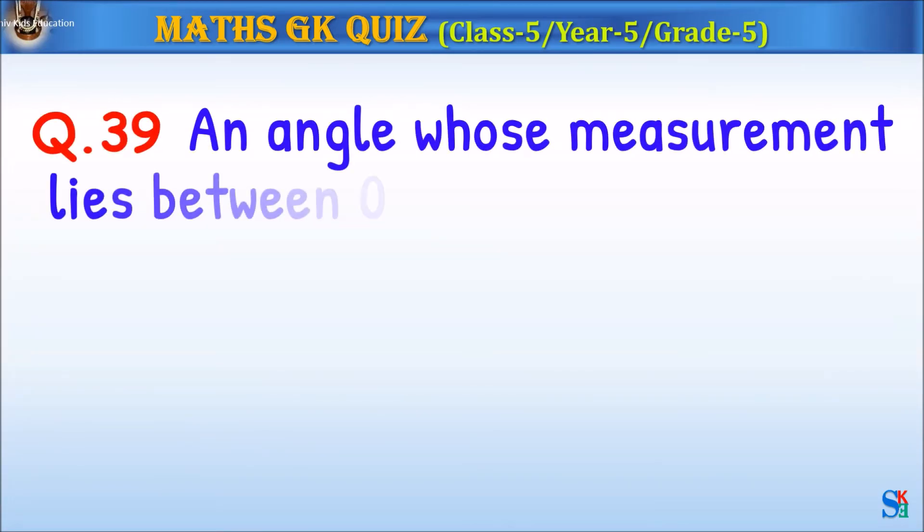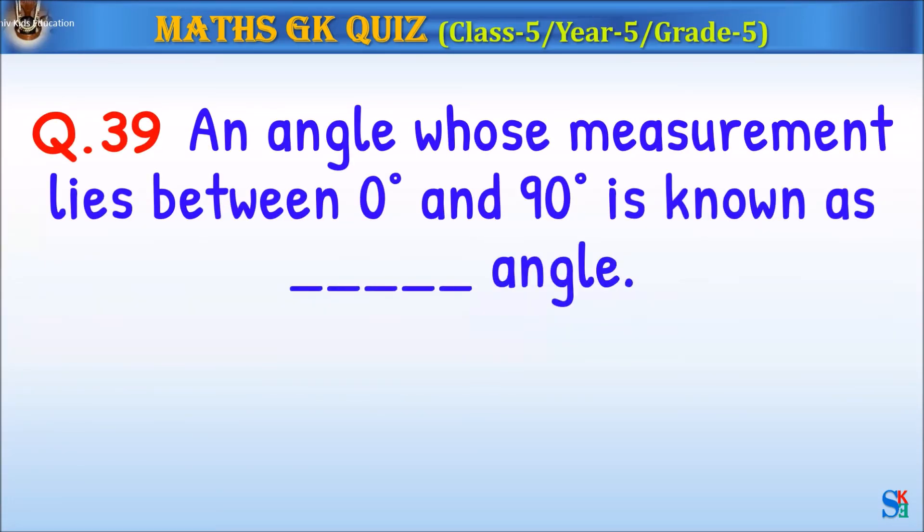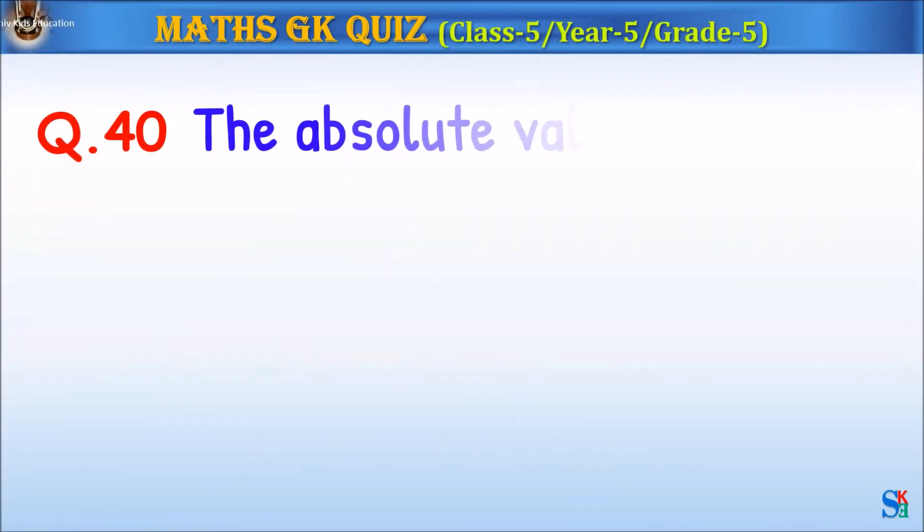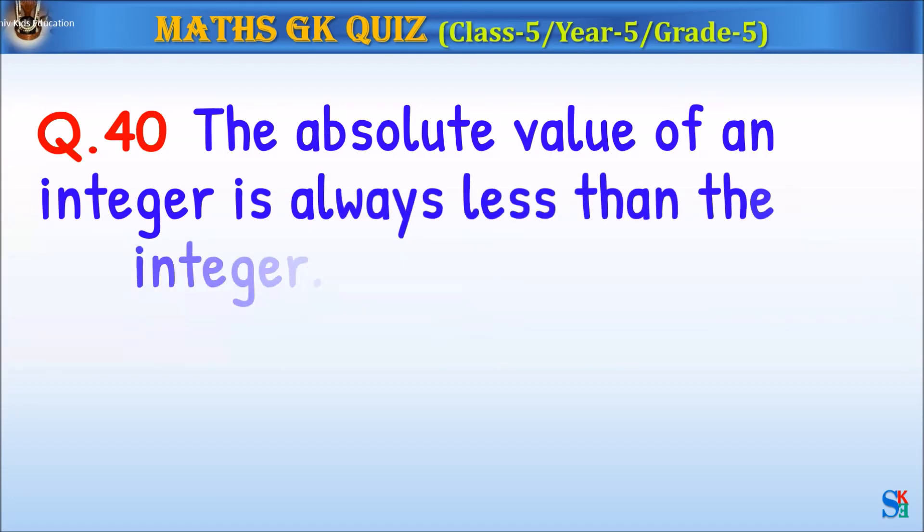Question 38: Which number is neither prime nor composite? The answer is 1. Question 39: An angle whose measurement lies between 0 and 90 degrees is known as what angle? The answer is acute angle.